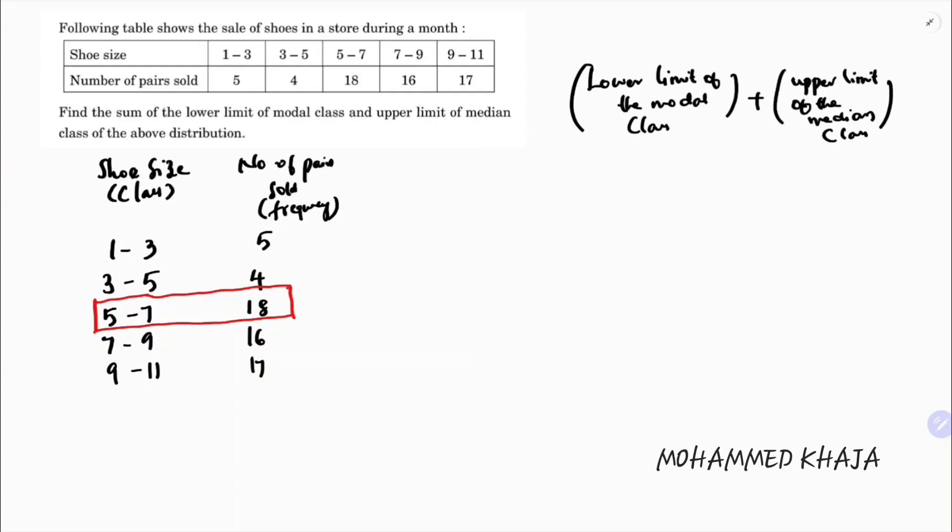When calculating mode, we take the highest frequency and consider that as the modal class. Here, the modal class is 5 to 7, and the lower limit of the modal class is 5.